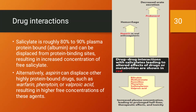Regarding drug interactions, salicylate is approximately 80–90% plasma protein-bound and can be displaced from protein binding sites, increasing free salicylate concentration. Aspirin can also displace other highly protein-bound drugs such as warfarin, phenytoin, or valproic acid, resulting in higher free concentrations of those drugs. Aspirin can compete with heparin or oral anticoagulants leading to hemorrhage, and can compete with probenecid causing decreased urate excretion.